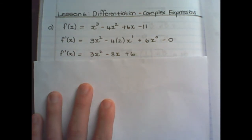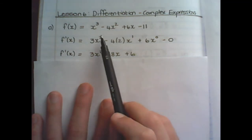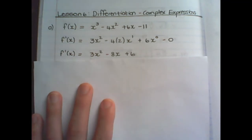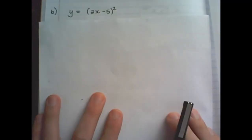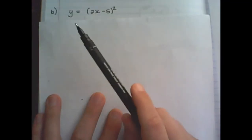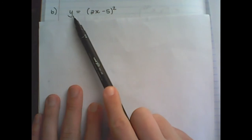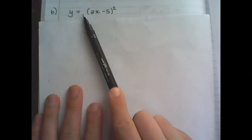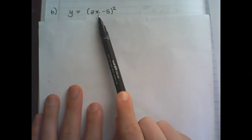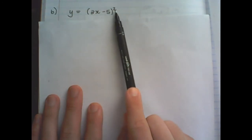So I simply apply the rule of differentiation, which we have learned before, to every term individually. In our second example we have y = (2x minus 5) squared.